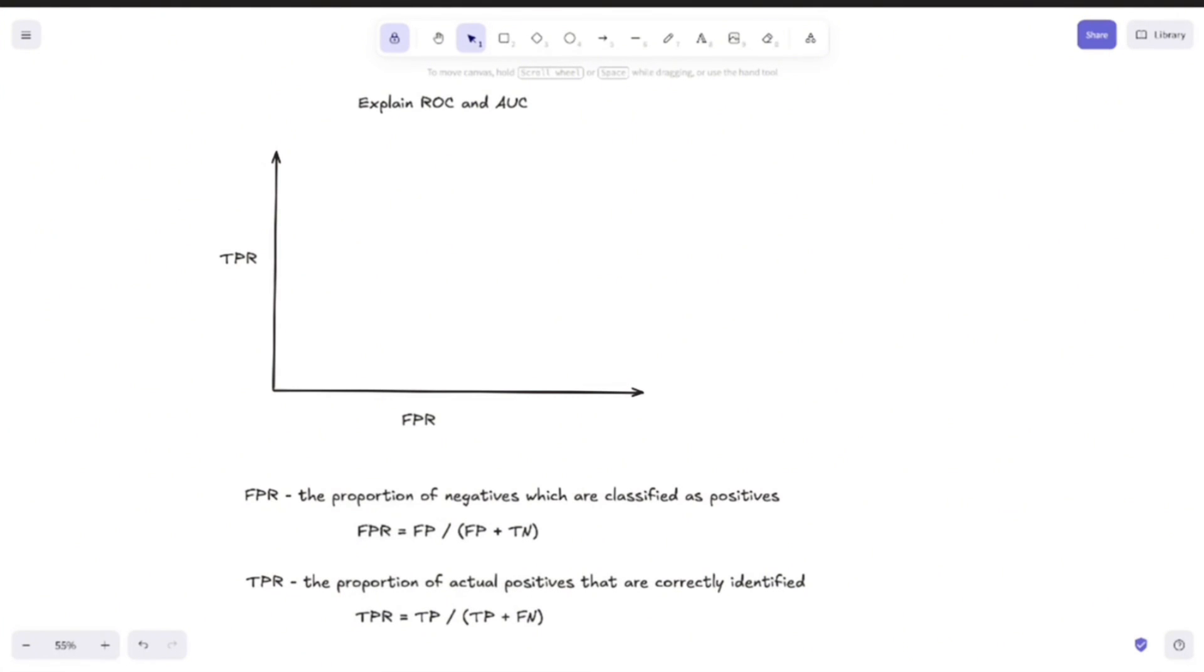And what we do next in ROC is to measure the performance for different thresholds. And we start with a threshold equal to 1. And for this specific threshold, the number of positives will be equal to 0. Why? Because in order for a sample to be classified as positive, its probability has to be higher than the threshold.